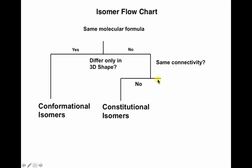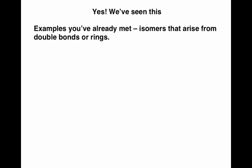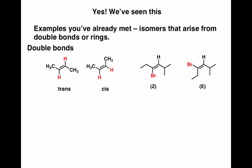Now here's a question: is it possible for two molecules to have the same molecular formula, the same connectivity, but not be the same molecule? And the answer is yes — we've actually seen this. Some molecules with double bonds are a perfect example. Both of these molecules, for example, are 2-butene, but they have different shapes. And since we can't rotate about a double bond without breaking it, these molecules have different physical properties — different boiling points, different melting points. They're different molecules. The same connectivity, but a different arrangement in space: cis and trans.